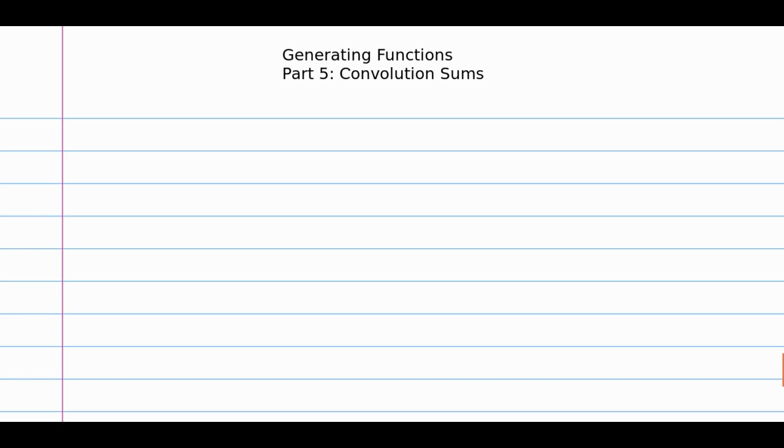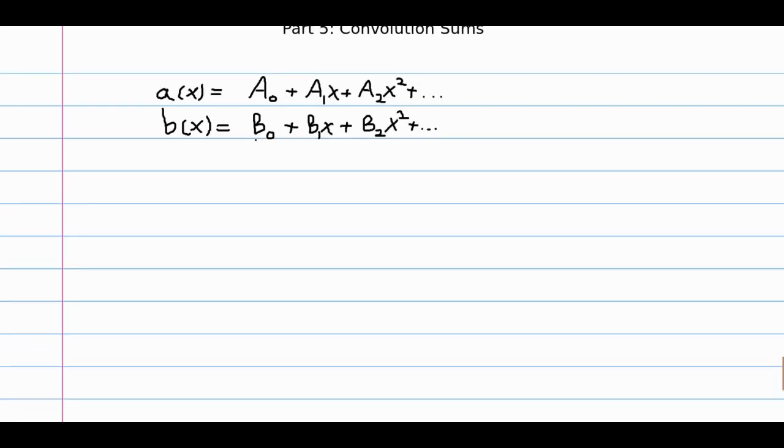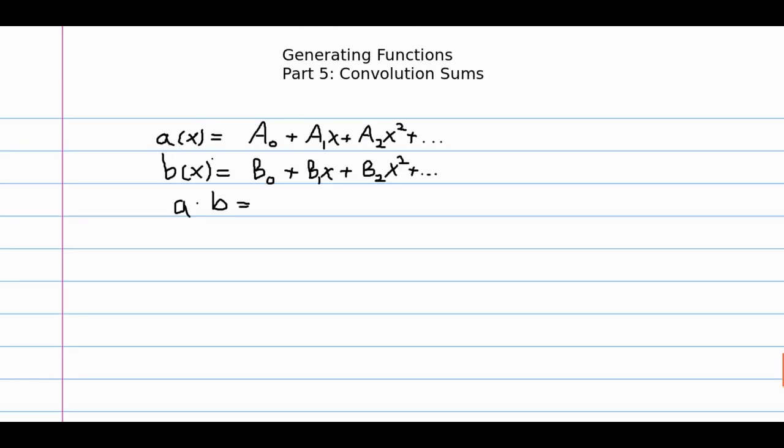So what I mean by that is, if we have two functions, a of x and b of x, which generate their capital letter sequences, and let's say we're interested in what a times b is. A lot of times we want to multiply, as we saw in just the first example of generating functions. We had to multiply polynomials, and it didn't look much better.